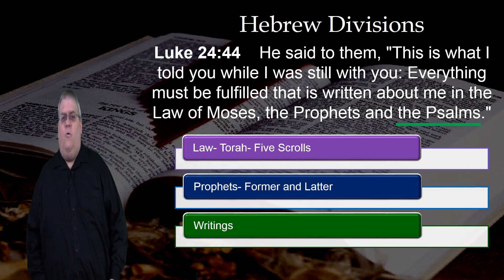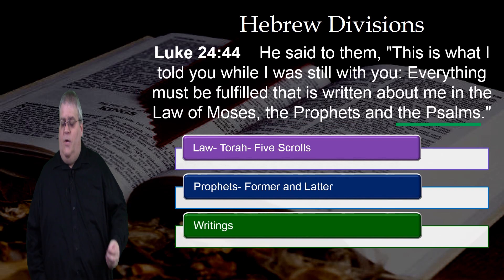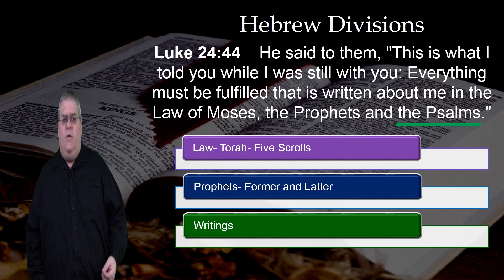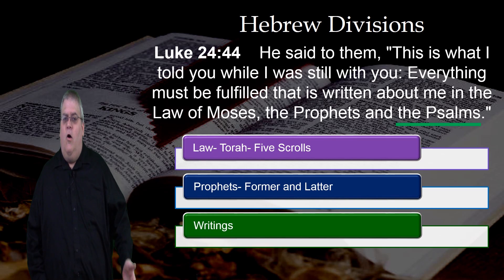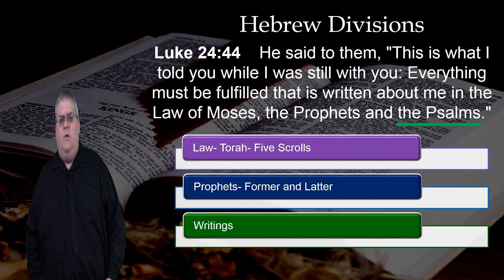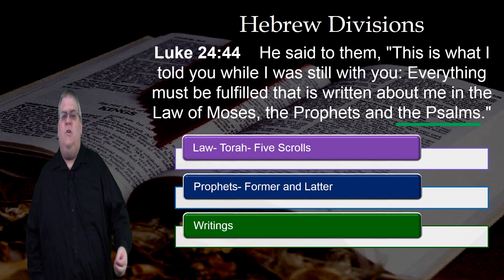Then the third category in the Hebrew Bible is called the Writings. This is sometimes called the Psalms, because the Book of Psalms is the most prominent book in this collection. But this category also has wisdom books, such as Proverbs and Job, and miscellaneous books, such as Lamentations and the Book of Ruth.